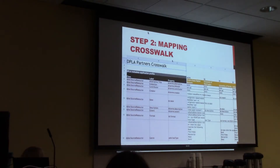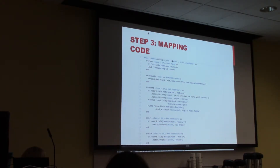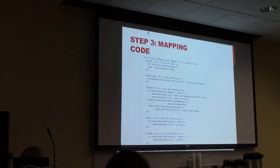The next step is to write a simple crosswalk in a spreadsheet so we can agree on what properties in your records we're going to map to DPLA properties. DPLA will be completely responsible for translating that spreadsheet into code that runs a script against your records, harvesting and creating new DPLA MAP-compliant records. That will of course be an iterative process to make sure we got everything right.